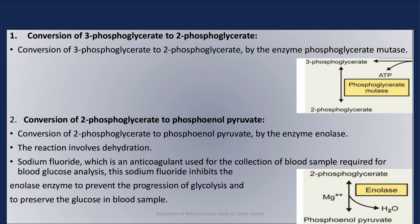Step 2 is the conversion of 2-phosphoglycerate to phosphoenolpyruvate. This step involves conversion of 2-phosphoglycerate to phosphoenolpyruvate by the enzyme enolase. This reaction involves dehydration — a molecule of water is removed in this reaction.